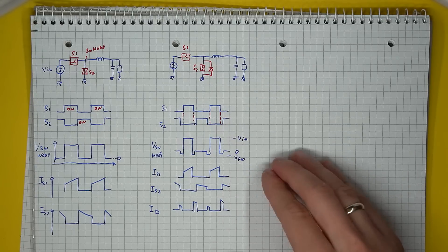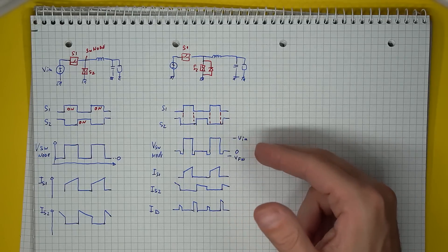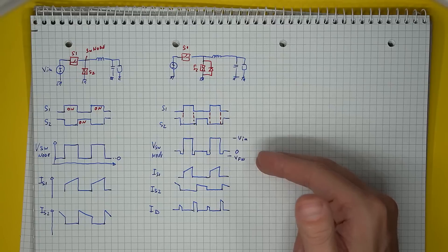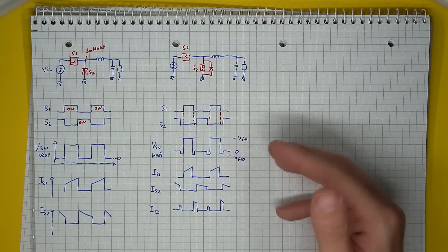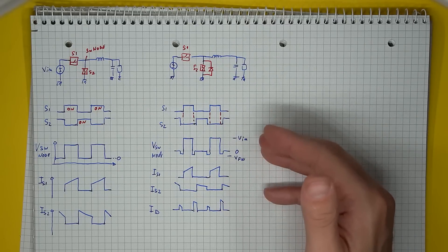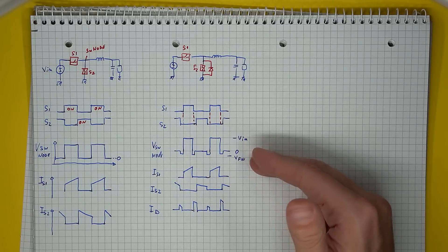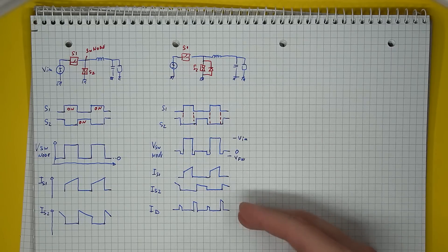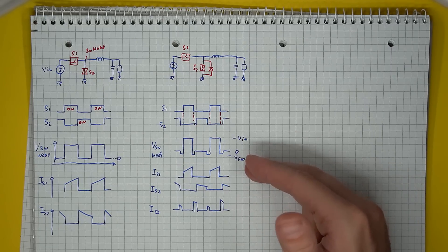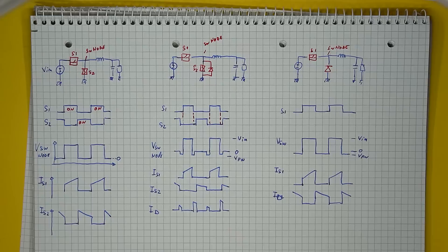Because of this, the waveforms slightly change. The voltage in the switching node drops to negative values when the diode is conducting, the exact amount being the diode's forward voltage. And then the current goes through the diode when neither of the transistors is being driven.